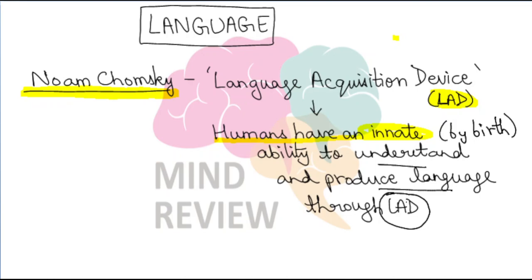The Language Acquisition Device is not a physical structure that is inserted; it was Chomsky's conceptual idea that such a device exists and is present in all of us by birth. Because of this Language Acquisition Device, as we grow we are helped to understand what other people are speaking around us, to produce that language, and it also supports our grammar development.